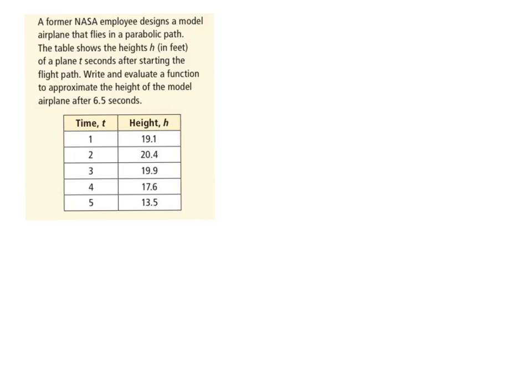In the last set of examples, a former NASA employee designs a model airplane that flies in a parabolic path. The table shows the heights h in feet of a plane t seconds after starting the flight path. Write and evaluate a function to approximate the height of the model airplane after 6.5 seconds. We have a table of information and we have to determine what type of equation it is.